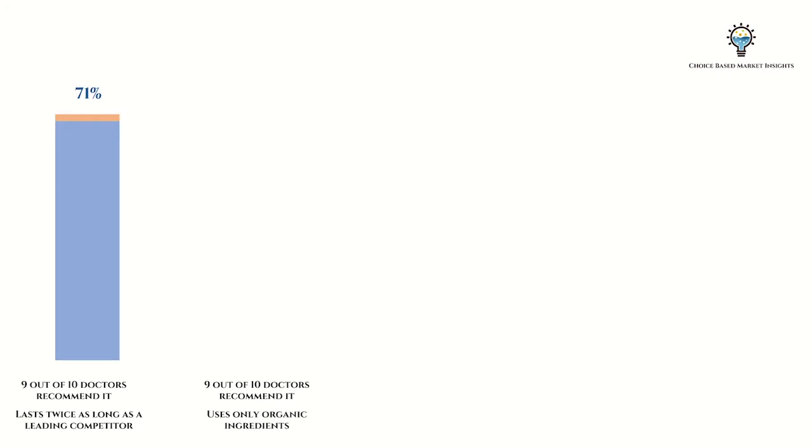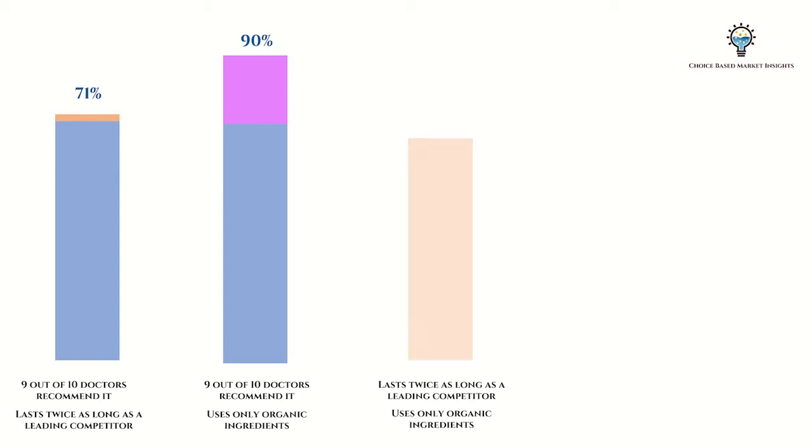The other two messages, however, capture customers that have not liked the first two messages. So when we look at which combination of two messages will capture the largest market appeal, we can't just rank the messages in order of appeal. TURF analysis will give us incremental appeal — the combination of items or messages that together capture the largest reach within your market.